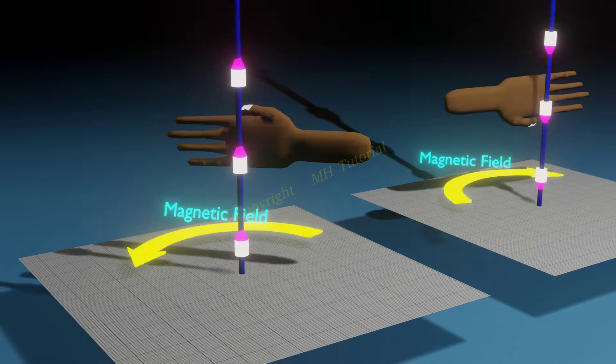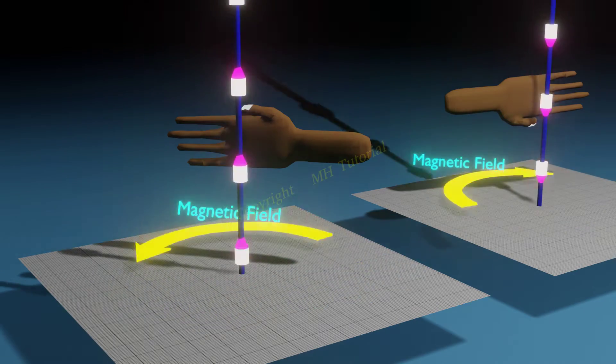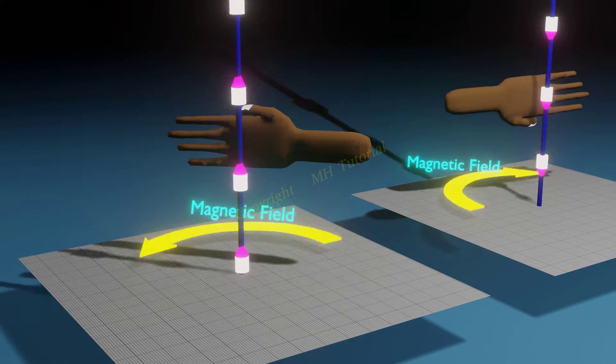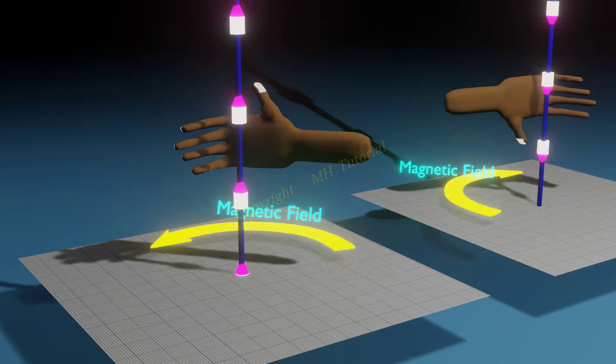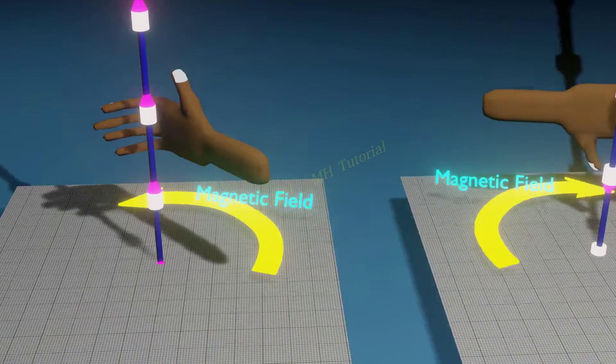Its direction is governed by the right-arm-thumb rule. If the right thumb shows the direction of the current, then other fingers should be in the direction of the magnetic field around the wire.